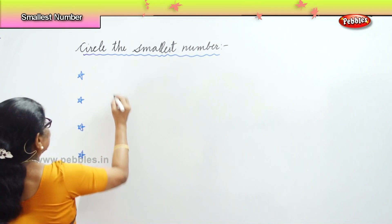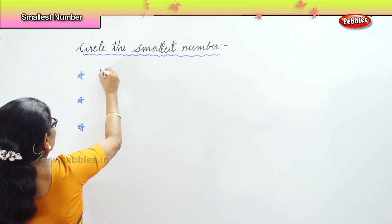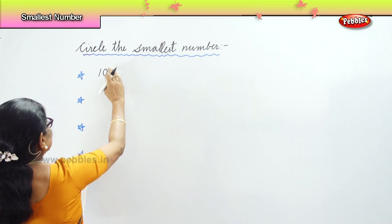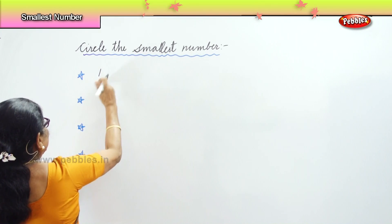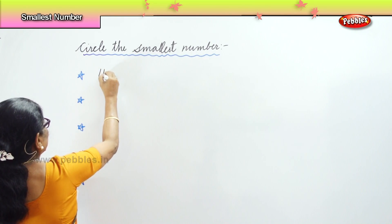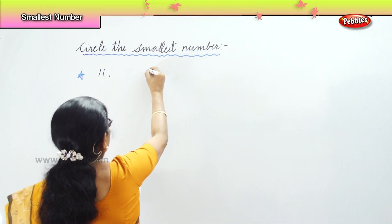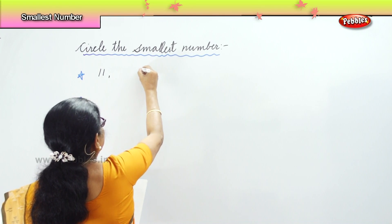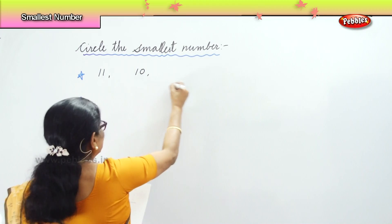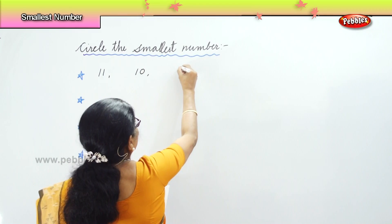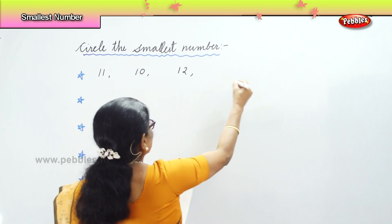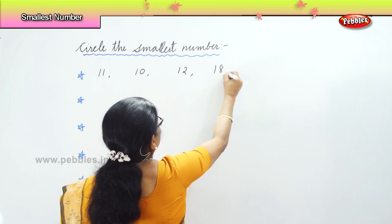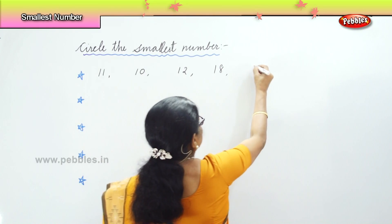Now just look at this first one. You have here: eleven, then ten, twelve, eighteen and thirteen.